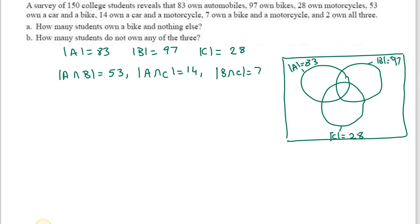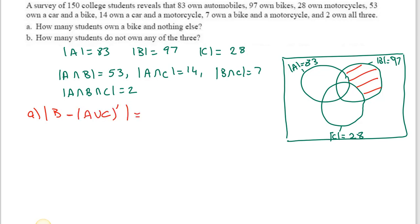Two students own all three, so |A∩B∩C| = 2. The first question asks how many students own a bike and nothing else — that is, we want B but not A and not C. Using set notation, this is B intersect (not A) intersect (not C).